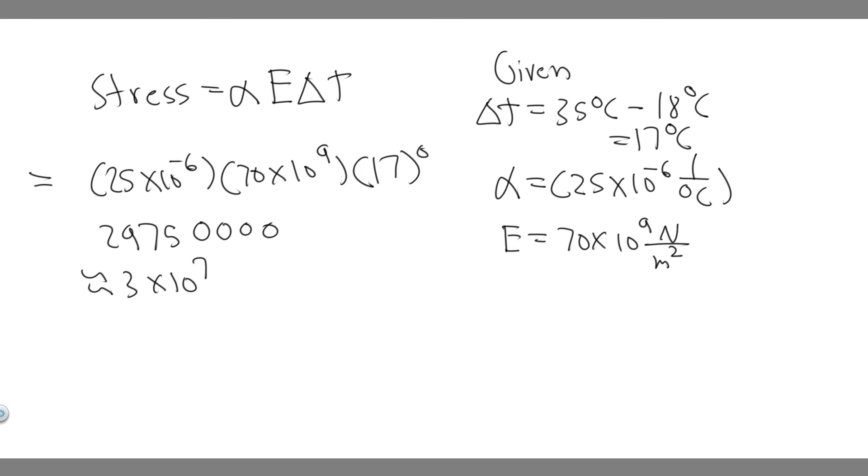Keep in mind the units. This is in degrees Celsius. This was inverse degrees Celsius. And then this was Newton meters squared. So these are just going to cancel. So your answer is just going to be in this unit. So you're going to get 3 times 10 to the 7, rounded of course, so 3 times 10 to the 7 Newton per meter squared. So this right here is going to be your answer.